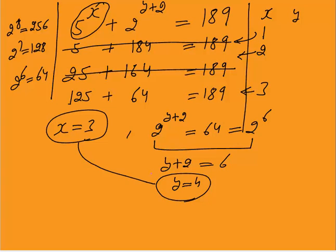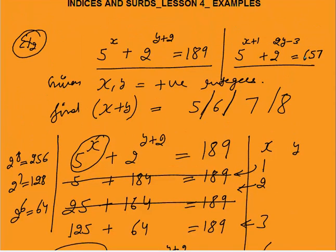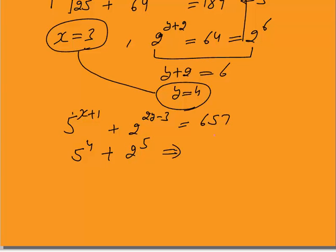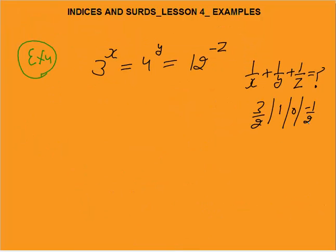We got x = 3 and y = 4. Now check in the other equation: 5^(x+1) + 2^(2y-3) should equal 657. With x = 3 and y = 4: 5^4 = 625 and 2^5 = 32, giving 625 + 32 = 657. This confirms x = 3, y = 4. Therefore x + y = 3 + 4 = 7. The answer is 7, solved using simple logic.